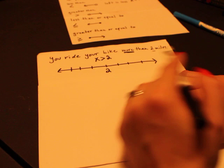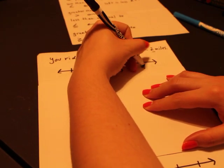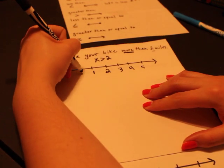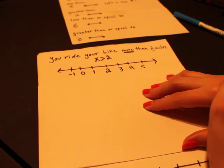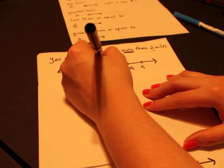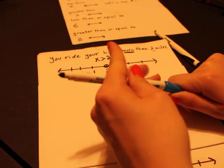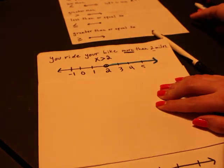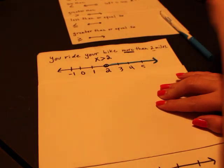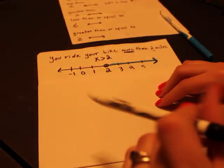And then you just label numbers greater than two: three, four, five. Numbers less than two this way: one, zero, negative one. X is greater than two. So we're going to have an open circle on two, and greater than, we're going to shade all values to the right. So that means x could be three, four, five—it could even be two and a half as long as it's greater than two.